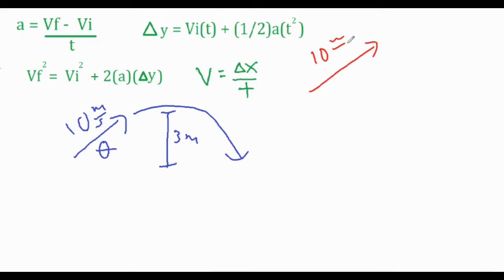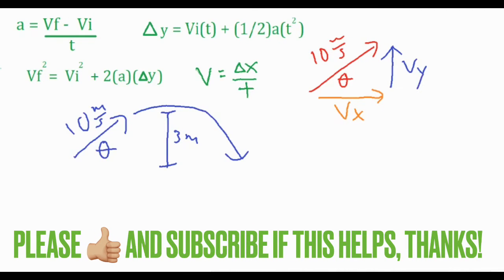We have the hypotenuse, which is 10 meters per second, and we have some unknown angle theta. So if we either find the x component or the y component of the object's velocity, then we can go ahead and find the angle by using a little bit of trig.